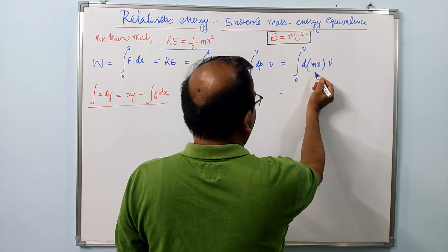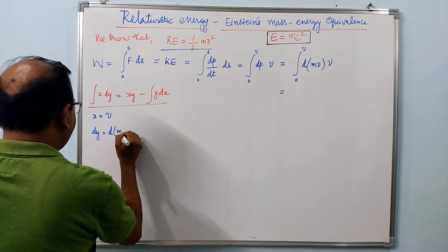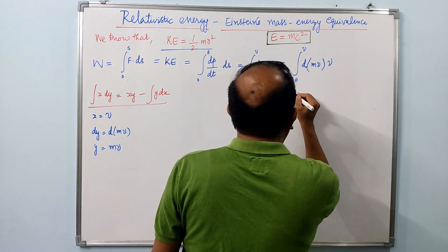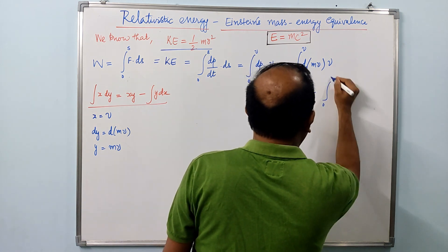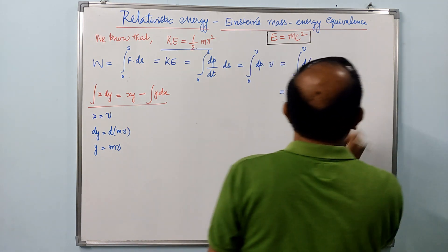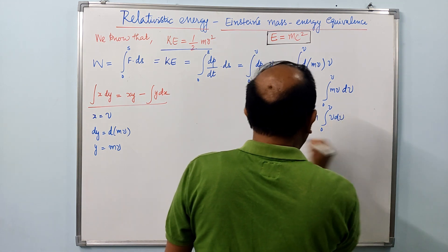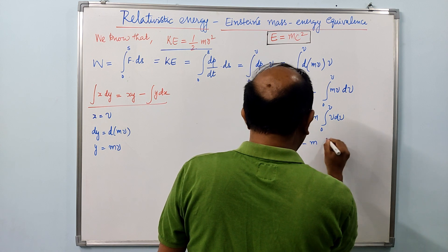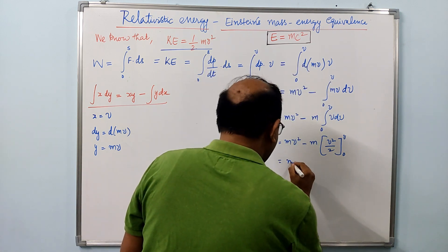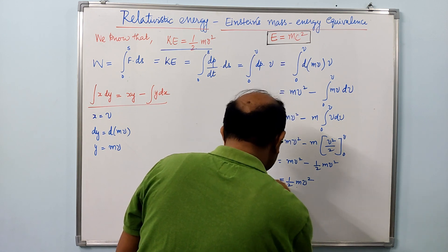In our case, x is v and y is mv, so dy equals d(mv), and y equals mv. Applying integration by parts: the xy term gives mv², minus the integral of y dx, which is mv dv. Since mass is constant, we take it out: mv² minus m times the integral from 0 to v of v dv, which equals mv² minus ½mv², giving us ½mv². This is the classical expression for kinetic energy.